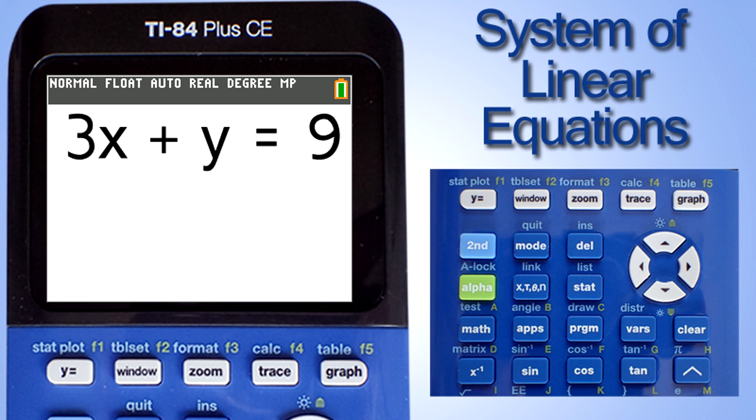We are going to solve this system of linear equations: 3x plus y equals 9 and y equals negative x minus 1.